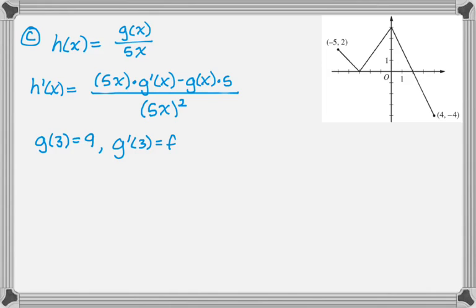g prime of 3, you can just read off the graph, because that's f of 3. And f of 3, if you look, you end up at negative 2. You could write the equation of that line and then plug in 3, but you're always just going down 2 over 1. So if you start at 0, 4, and keep doing that, you're going to end up at negative 2.